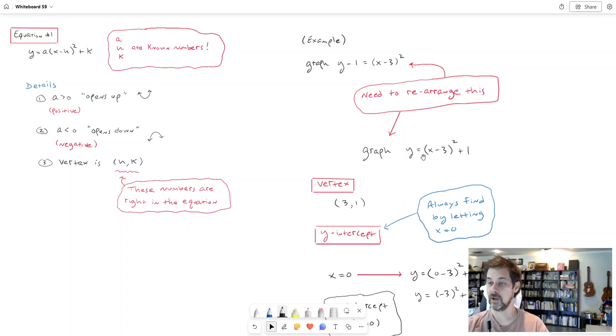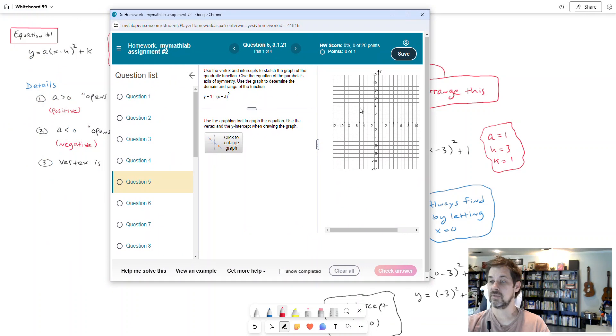It's this number h for the x coordinate and this number k for the y coordinate. And this looks exactly like that. It says y equals one times x minus three squared plus one. So if you wanted to, if you really like to track the details with these, then I would say a is one. One times x minus three is h and k is equal to one. If you wanted to be explicit about identifying those numbers.